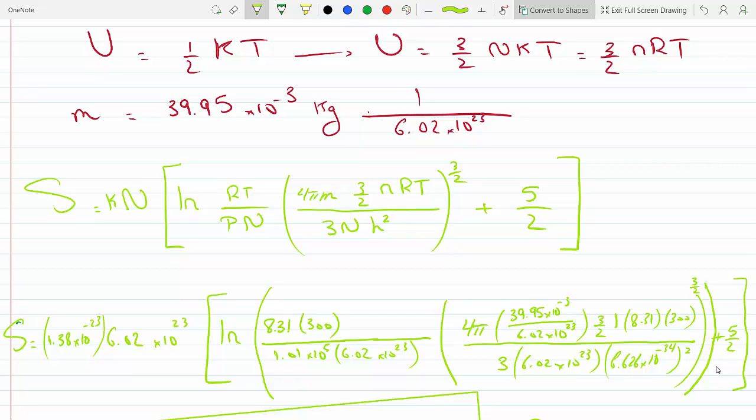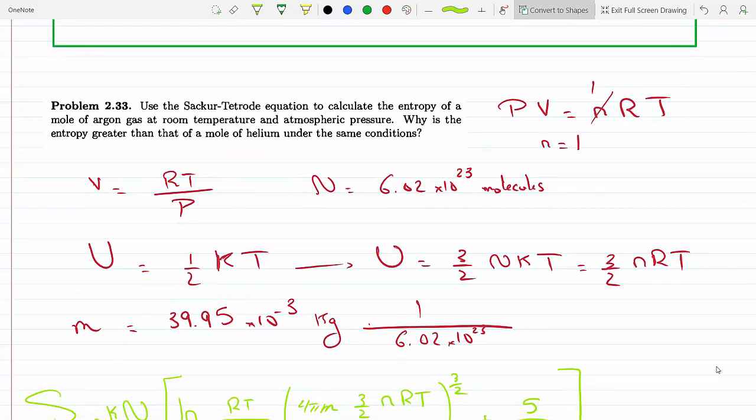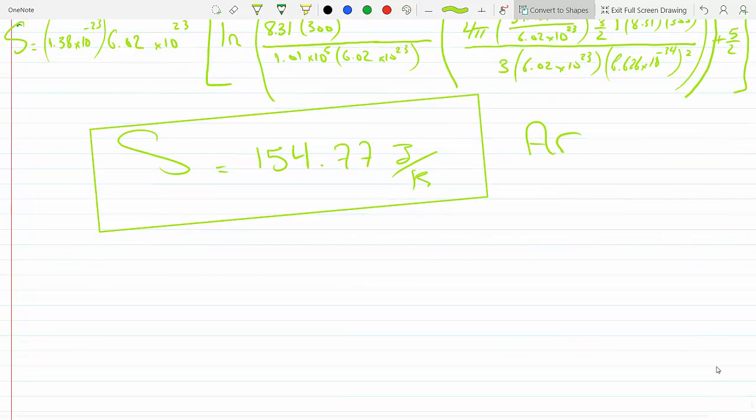It's inside the ln, but still it's an increasing function. So as the mass increases, the argument inside the ln increases, which means the entropy has to increase. Helium has a smaller mass than argon.